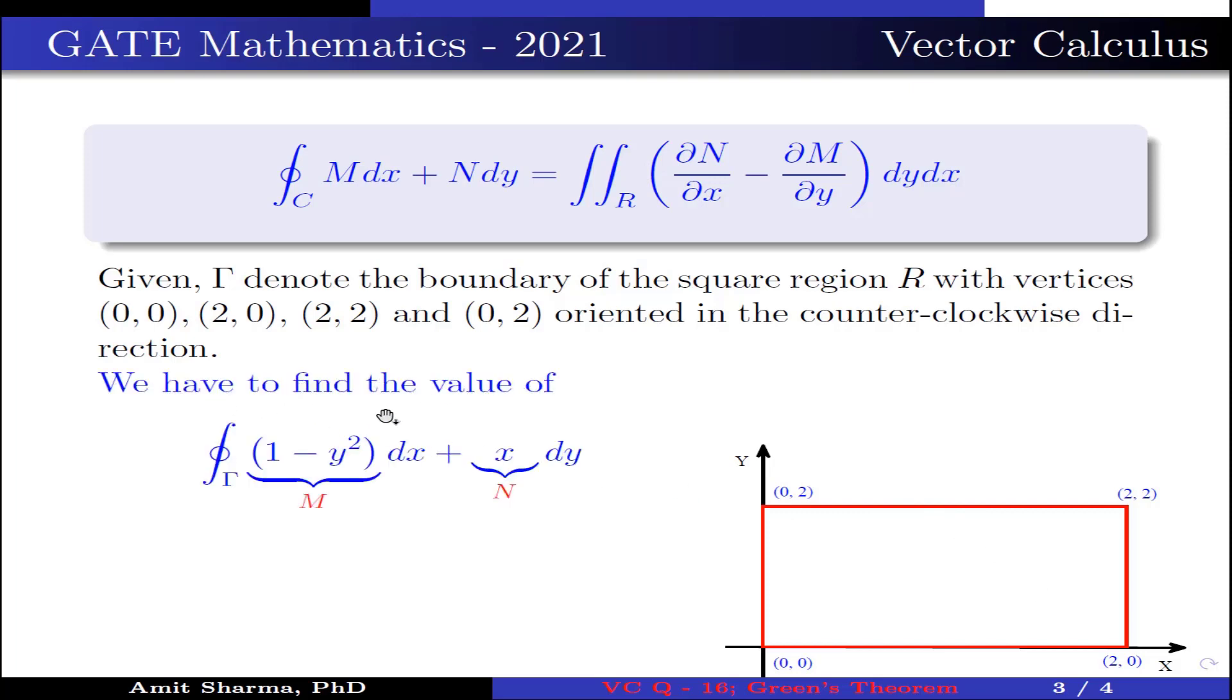Now we have to find the value of closed integration over gamma (1-y²)dx plus x dy. Here 1-y² is equal to M and x is equal to N. Now ∂M/∂y is equal to -2y and ∂N/∂x is equal to 1.